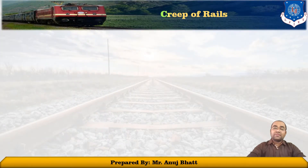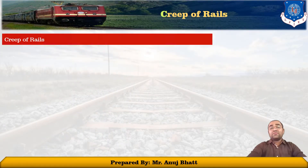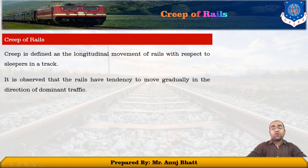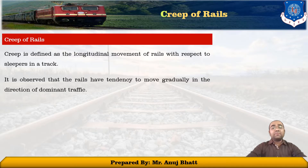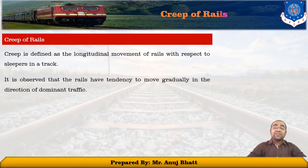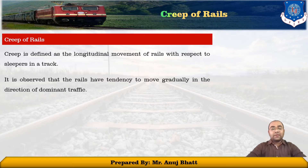The next topic is the creep of rails. Creep is defined as the longitudinal movement of the rails with respect to the sleepers on a particular track. Creep is common to all railway tracks, but it varies considerably in magnitude. Rails in some places move by several centimeters in a month, while in other locations the movement may be negligible. It is observed that rails have a tendency to move gradually in the direction of dominant traffic.